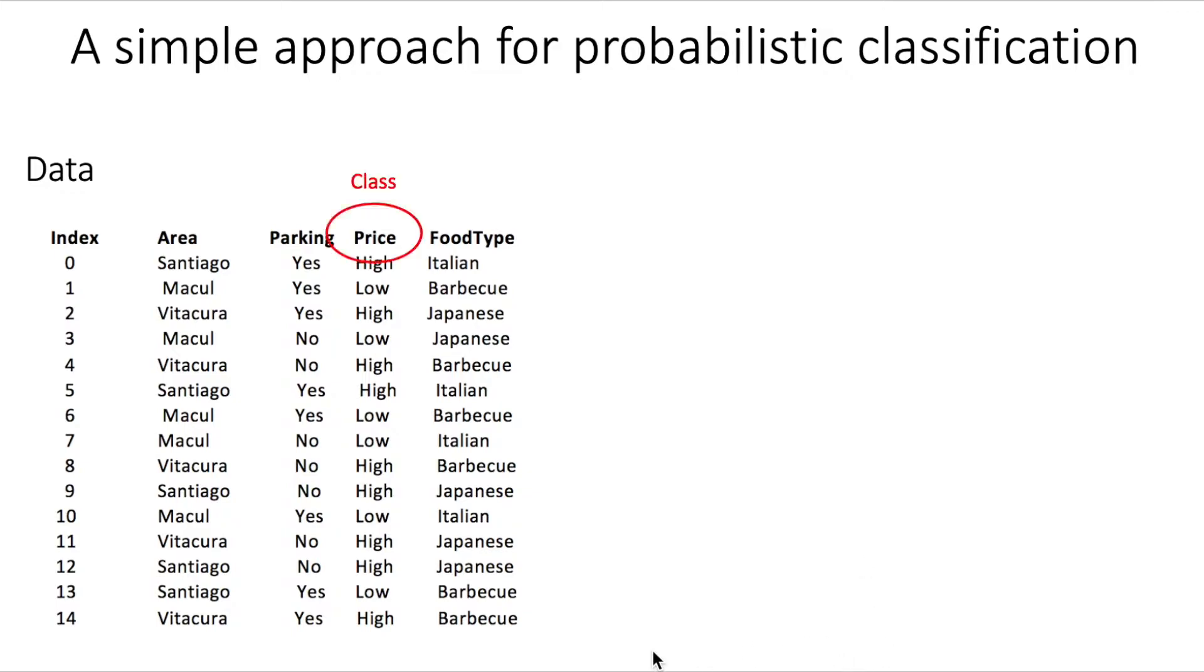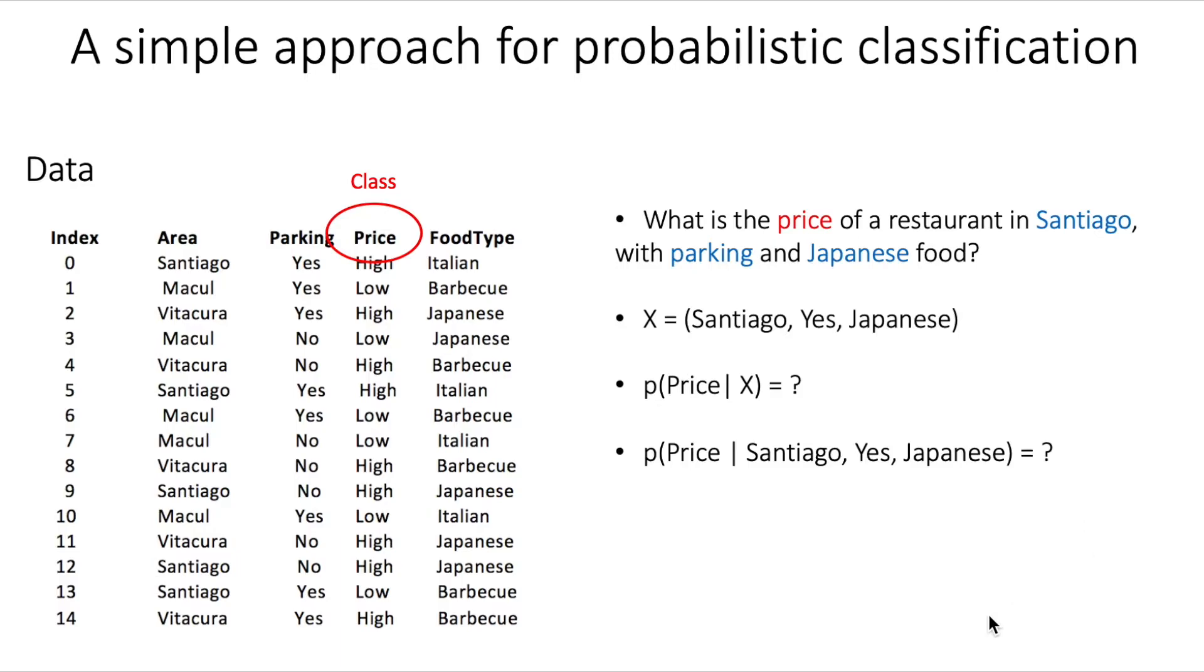So assume that this is the class, the price. In other words, this is what we want to predict with a model. So for example, we can ask what is the price of a restaurant that is located in Santiago with parking and with Japanese food.